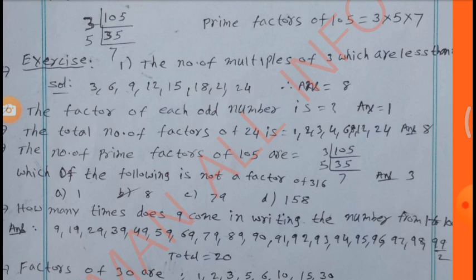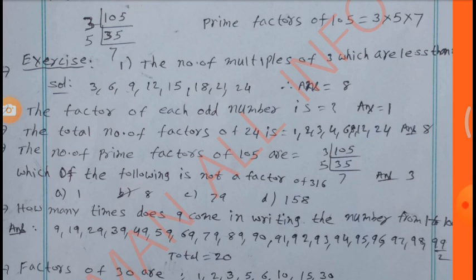Second question: The factor of each odd number is 1. The total number of factors of 24 is 8: factors are 1, 2, 3, 4, 6, 8, 12, 24. The number of prime factors of 105 is 3 (which are 3, 5, 7). Answer is 3.